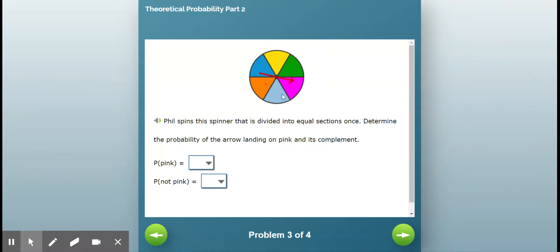Well, how many total sections are on the spinner? There's six. How many of them are pink? There's one. So one sixth is the probability that it will land on pink.